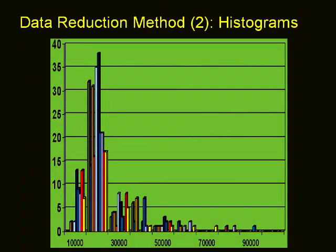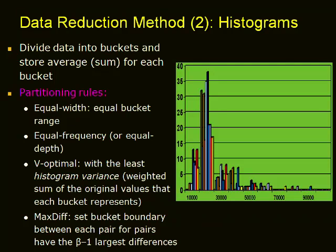Histograms are a non-parametric data reduction method that divide data into buckets and store the average for each bucket. We can use either equal-width partitioning — where each bucket has equal range — or equal-frequency partitioning — where each bucket has equal number of data tuples. The histogram with least variance can find the optimal value by taking the weighted sum of original values each bucket represents. Maximum difference is another parameter considered, and the bucket boundary can be set between each pair of adjacent values.